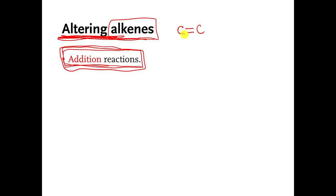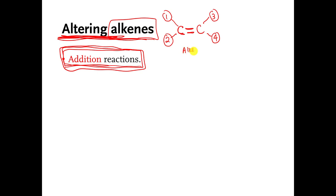So this carbon here currently is making two, so there must be two other bonds. Let's just pretend that there's something in spot number one and spot number two over there on the carbon on the left. Same thing with the carbon on the right — there's something in position number three and something in position number four. This is just a generic molecule with an alkene functional group.